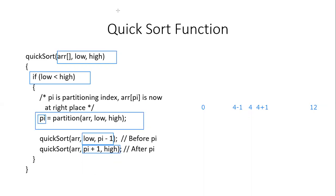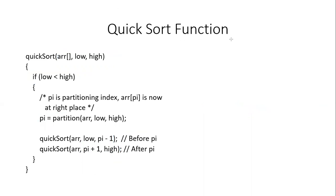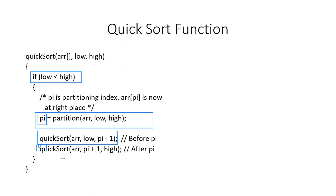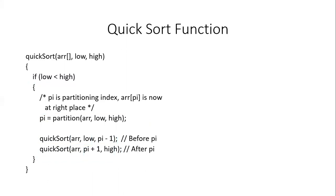Initially we check if the list has more than one element — if low < high. If there is more than one element, call the partitioning algorithm to place the first element at its correct position PI. Then call quicksort for the left side and quicksort for the right side. That is the complete recursive quicksort algorithm.